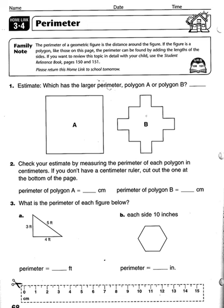Students are to first estimate in number one, which shape, A or B, which polygon has the largest perimeter, or larger perimeter of the two, excuse me. They can pick A or B.